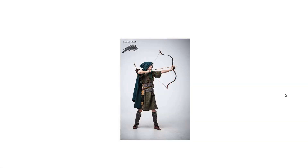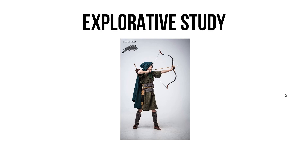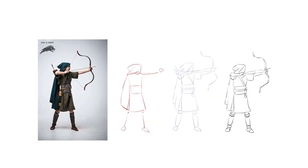Let's begin with the most straightforward way to make a character using our system, and that is applying the explorative study method to a real life picture, like we did in the cartooning lesson but applied to the whole body to make a whole character. This method in my opinion has its drawbacks, as you'll see later on in the lesson, but it can be a great starting point to make your own characters. Plus we are gonna build upon this for the more advanced methods of character creation we are gonna see in future lessons.